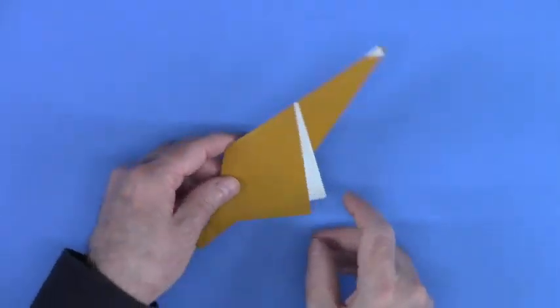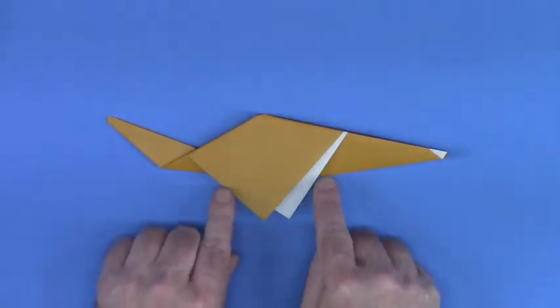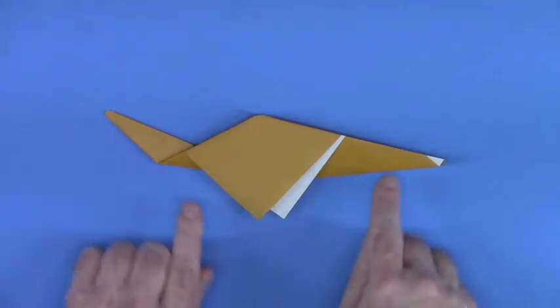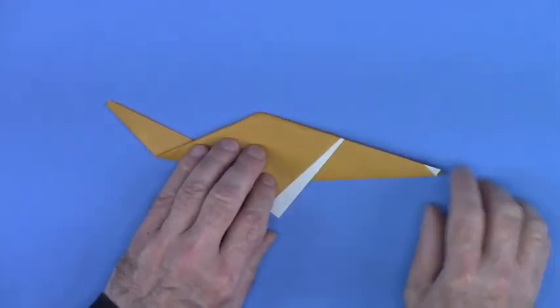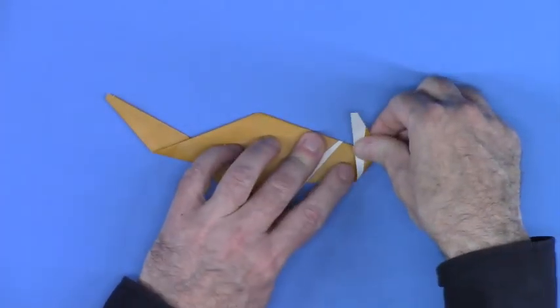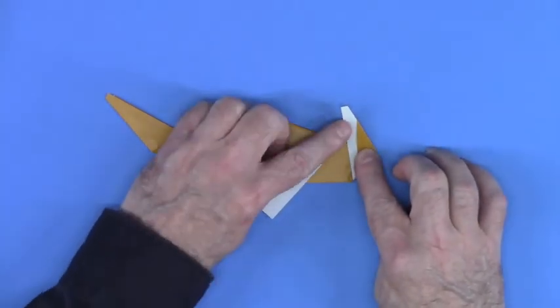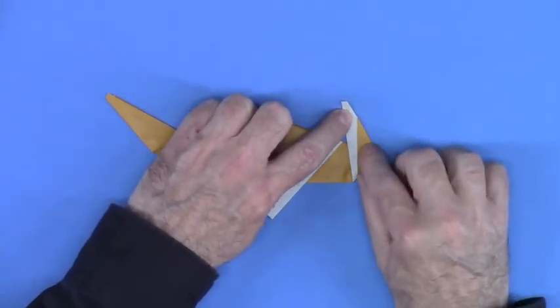Now let's flip the paper over. The fins are at the bottom. Here's the tail. This corner will be the head. Fold the head over at whatever angle you think looks best. Nice sharp crease.